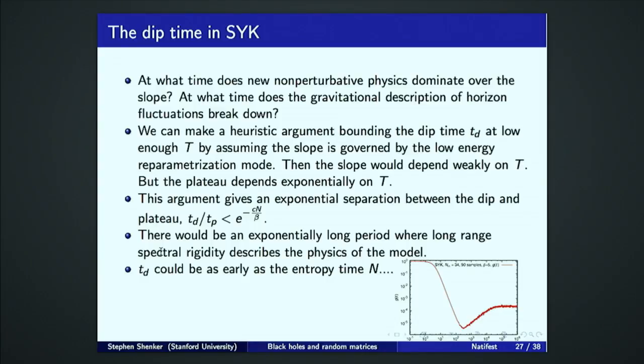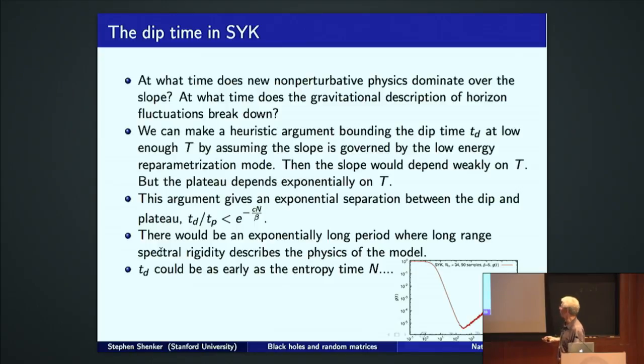We think this is actually a really crude lower bound. This could be as early as the entropy time when this perturbation series starts crapping out. And finding this is a big interesting question that involves understanding the dynamics of the Schwarzian system.